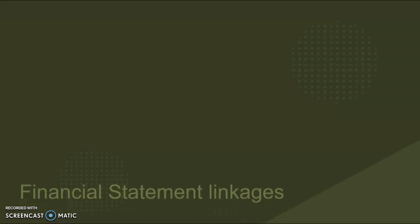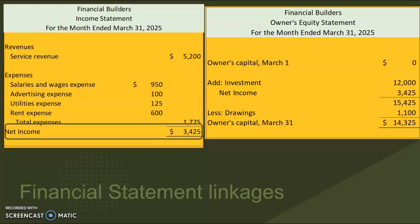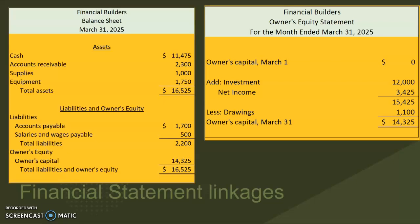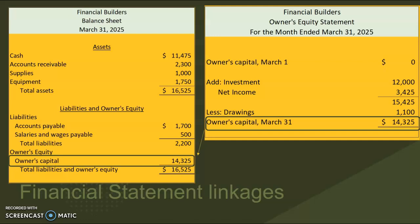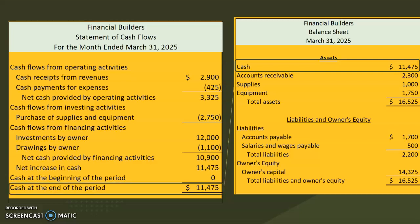Now let's review the financial statement linkages that we use to link these four statements together. We start with the income statement where we calculate net income. That net income is what gets pulled into our owner's equity statement to link those together. Then from the owner's equity statement we calculate our ending owner's capital, and that is the amount that gets pulled into the balance sheet, our point-in-time statement. Lastly, our balance sheet shows our cash, and our statement of cash flows shows all the ins and outs of the cash, so we can see that the cash on the balance sheet matches the ending cash on the statement of cash flows.